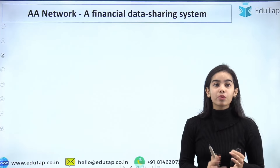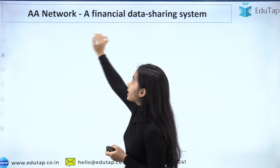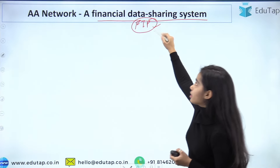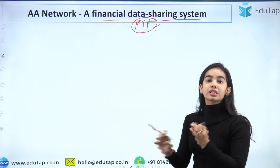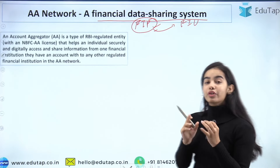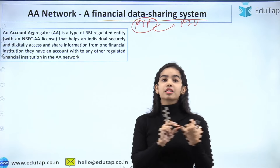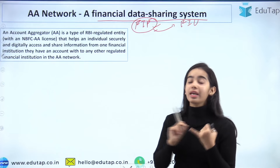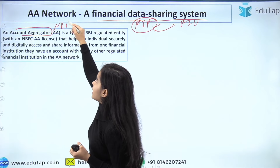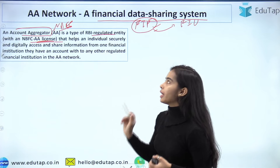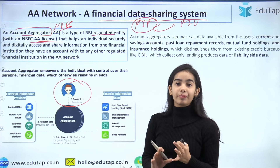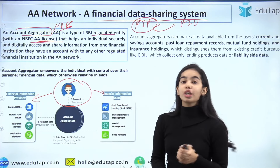The Account Aggregator network is a financial data sharing system. Financial information providers — that is, financial institutions that have the information — provide financial data to the financial information users. The Account Aggregator is regulated by the Reserve Bank of India; it is an NBFC and holds the NBFC-AA license. Account Aggregators are NBFCs that have the NBFC Account Aggregator license and help individuals share data from financial information providers to financial information users.